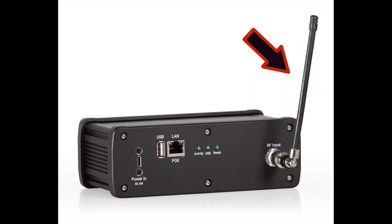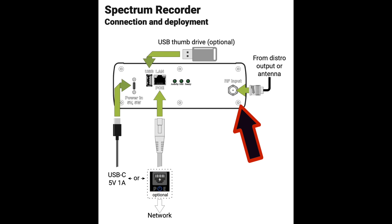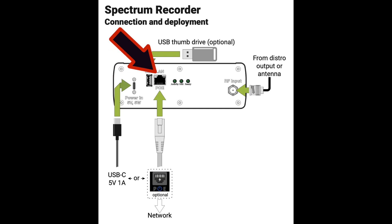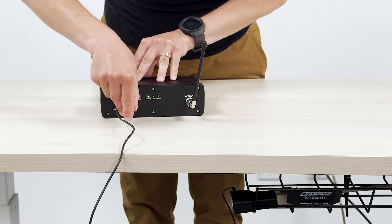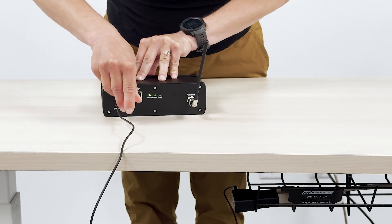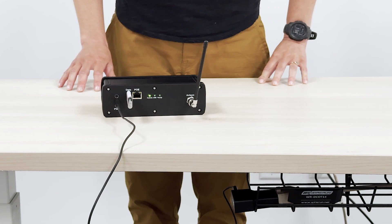Here's how you operate the Spectrum Recorder and get RF data from it. Install the antenna or connect to an output of a distro. Plug in power via USB or PoE. Wait 10 minutes to get full scan data. Insert a thumb drive or establish the Spectrum Recorder as a shared drive on a local area network.